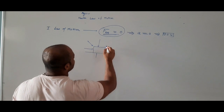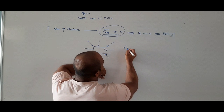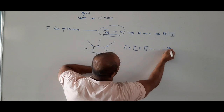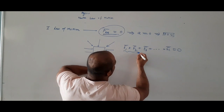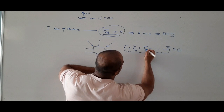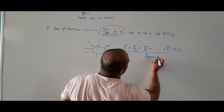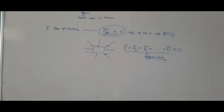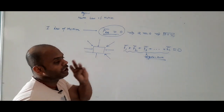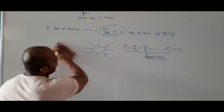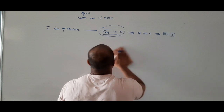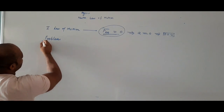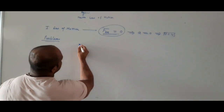If there are n number of forces, then F1 plus F2 plus F3 and so on plus Fn is equal to zero. This is the algebraic sum of all the forces equal to zero. External force ka matlab hua ki algebraic sum of all the forces is zero — net force on that body is zero. Tab hum first law lagaenge.